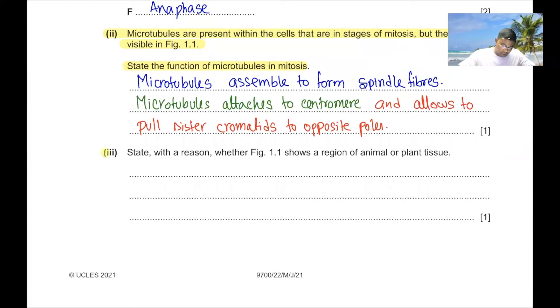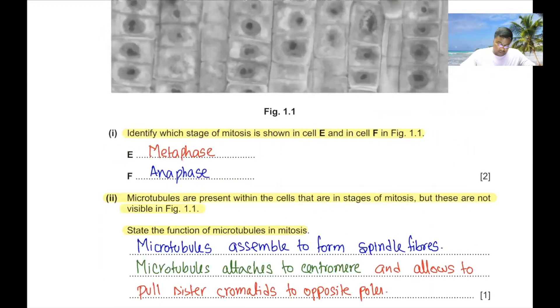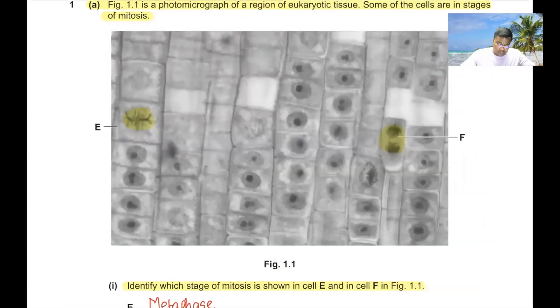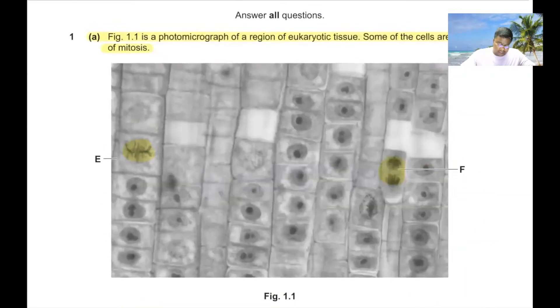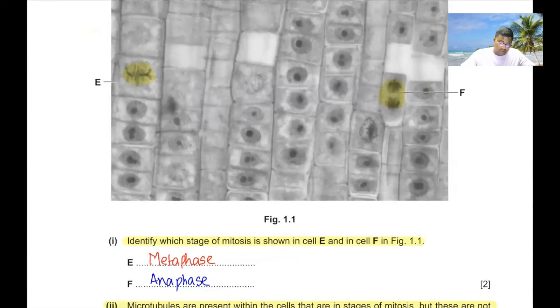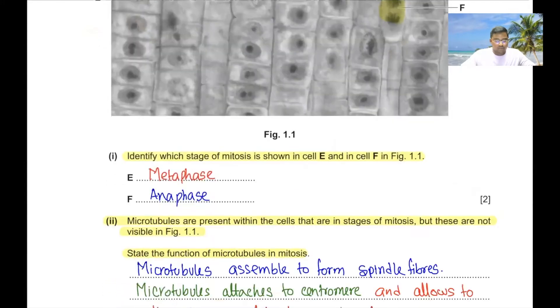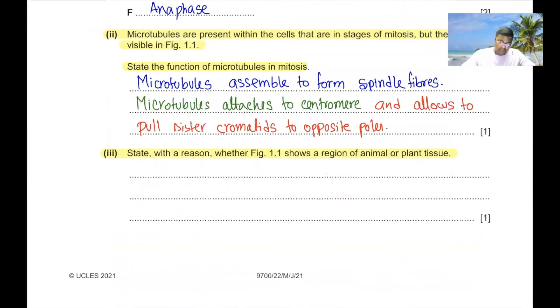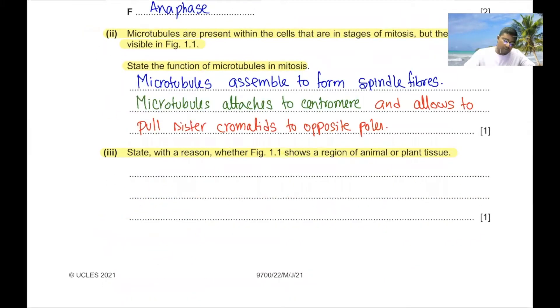Part 3. State with reason whether figure 1.1 shows a region of animal or plant tissue. In figure 1.1 we can see a plant tissue because we can see a cell wall and the cells have a regular shape.